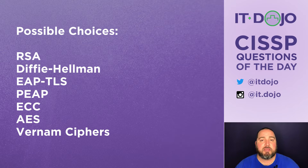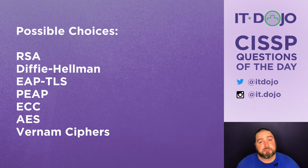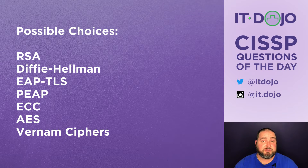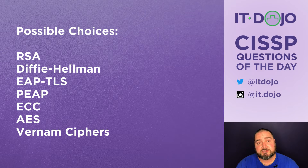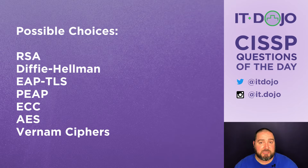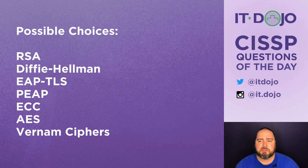The first option listed is RSA. RSA is actually two different algorithms — one for asymmetric cryptography and one as a digital signature algorithm. Over the years, RSA has required increasingly long keys in order to stay secure, and those increasingly long keys increase the overhead on the system. So that's not the best choice for what we're looking at here.